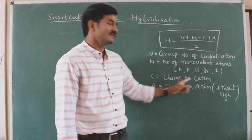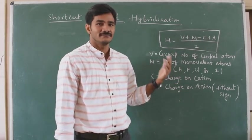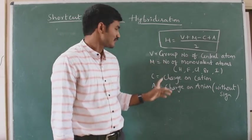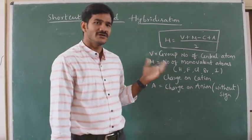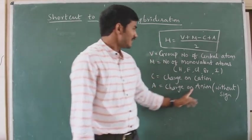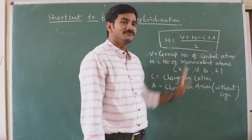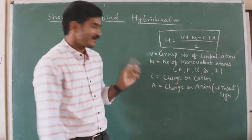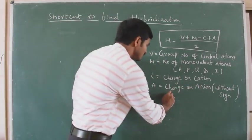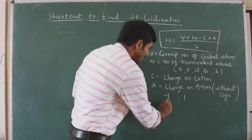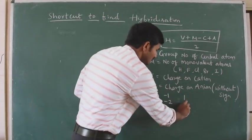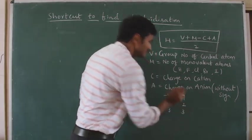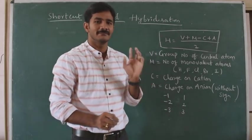C is the charge on the cation — plus 1 means 1, plus 2 means 2 — that is the charge we take. And A is the charge on the anion. Here we have to remember: take the number without the sign. So if the charge is minus 1, take 1; minus 2 charge means take 2; minus 3 charge means take 3. Don't take the sign — take the number.